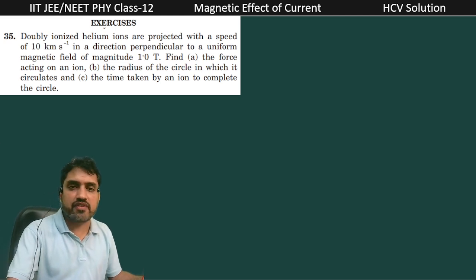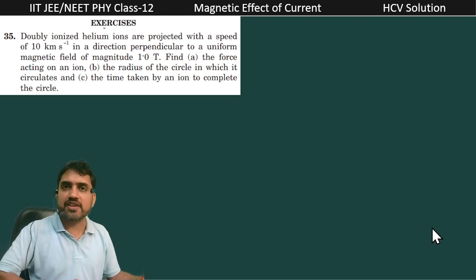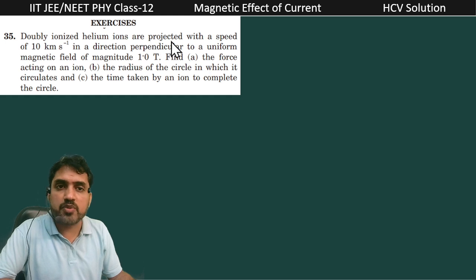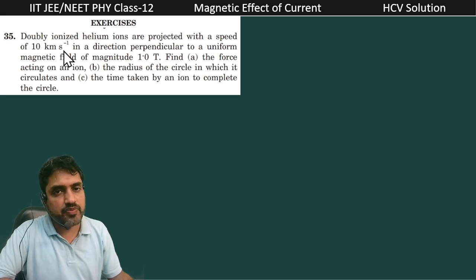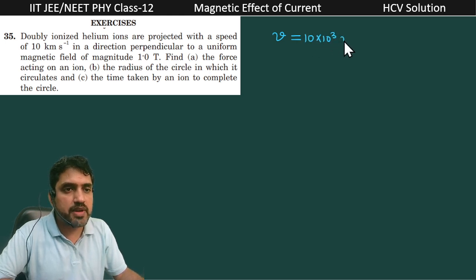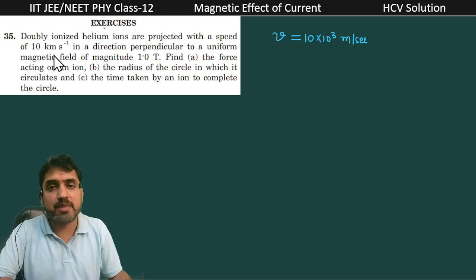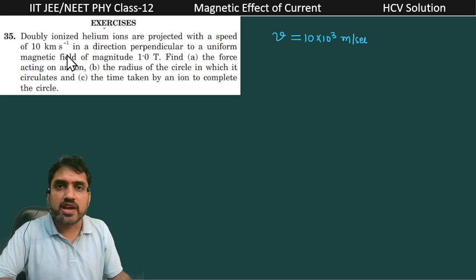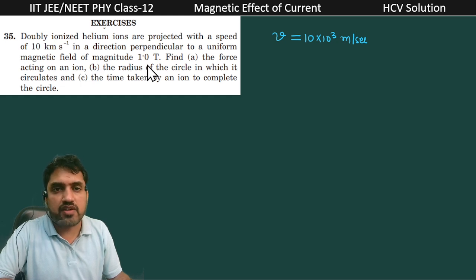Hello my dear students, now we are having next question, question number 35. Doubly ionized helium ions are projected with a speed of 10 kilometers per second, so the speed is equal to 10 into 10 raised to power 3 meter per second, because we can convert kilometers per second into meters per second by multiplying by 10 raised to power 3. Always we have to use SI units. The direction is perpendicular to the uniform magnetic field of 1 tesla.